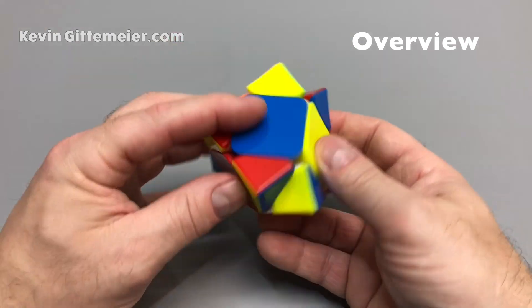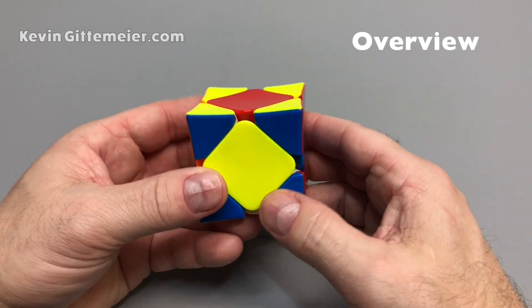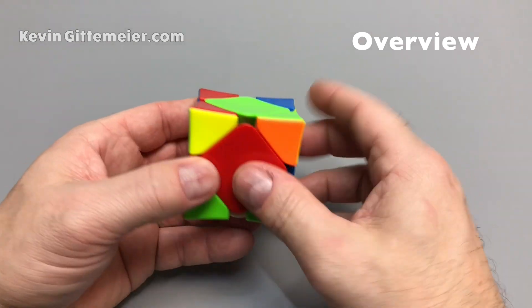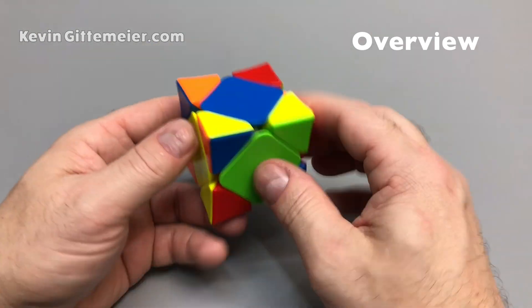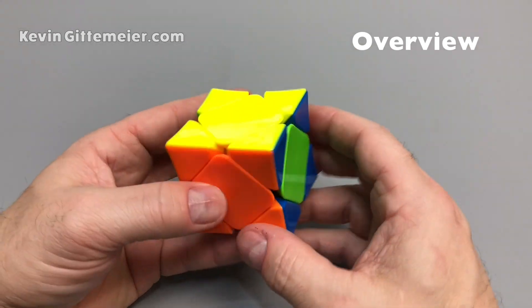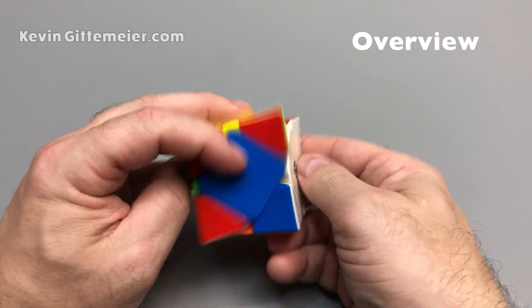Then we get all the yellow corners facing up on the top. We place the yellow center on top, solving the top layer. After that, all we need to do is fix the middle centers to solve the entire skewb.